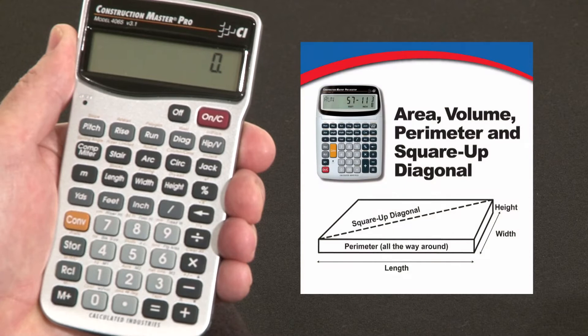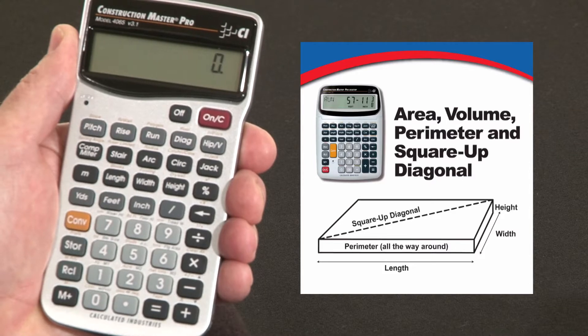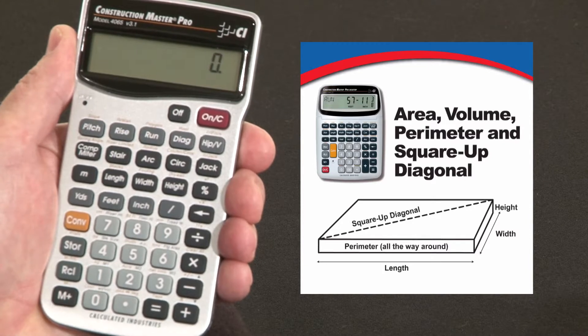Now let me show you how to calculate area, volume, perimeter, and square up diagonals using the length, width, and height key. Keep in mind, the keystrokes for this is exactly the same if you're using the Construction Master Pro desktop model. These functions give you a whole series of answers from just one input.